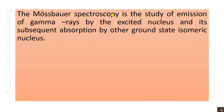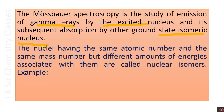Mössbauer spectroscopy is the study of emission of gamma rays by the excited nucleus and its subsequent absorption by other ground state isomeric nuclei, exciting them to the excited state. The nuclei having the same atomic number and the same mass number but different amounts of energies associated with them are called nuclear isomers.